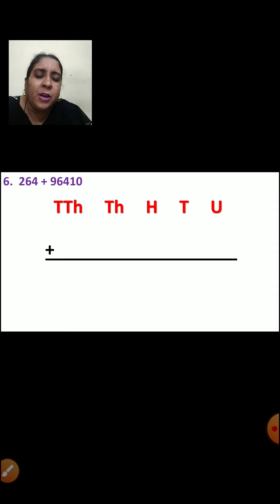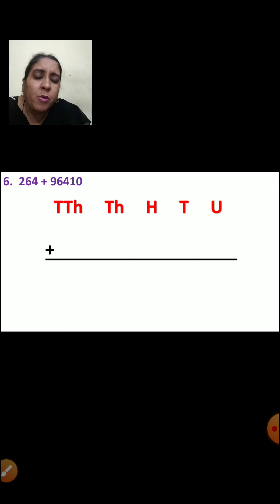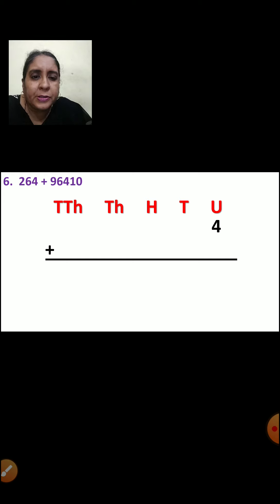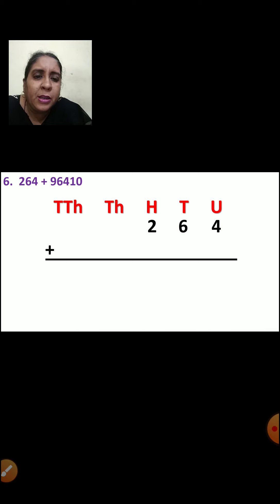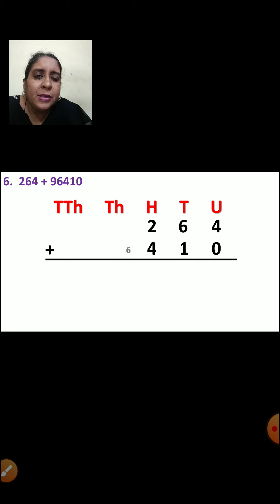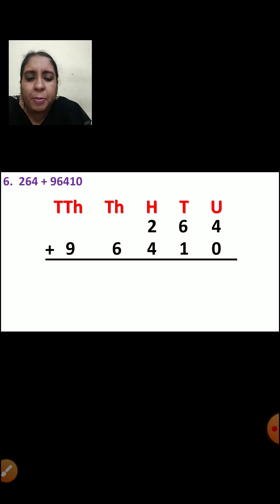Now let us do the next sum. The question is 264 plus 96410. One is a 3-digit number and the other is a 5-digit number. Again you are going to write the place and arrange the numbers. 4 will come in units place, 6 will come in tens place, 2 will come in hundreds place. Now for the next number: 0 will come in units place, 1 will come in tens place, 4 will come in hundreds place, 6 will come in thousands place, and 9 will be in ten-thousands place.